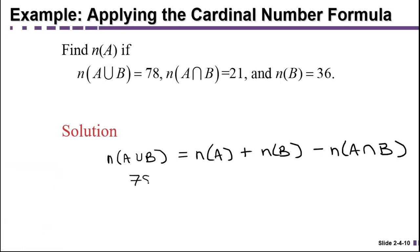So let's fill in what we know. We know that A union B has 78 elements. We know we're looking for N of A, so we're going to leave that the same. We know that the number of elements in B is 36, and the number of elements in the intersection is 21. In other words, 78 equals N of A plus 15. So what do you have to add to 15 to get 78? Let's subtract and find out. So the number of elements in A or cardinality of A is 63 using the cardinal number formula.